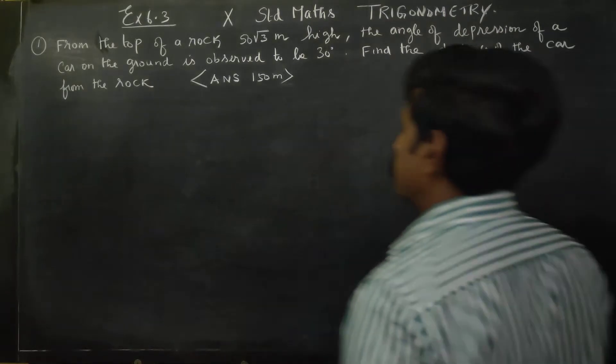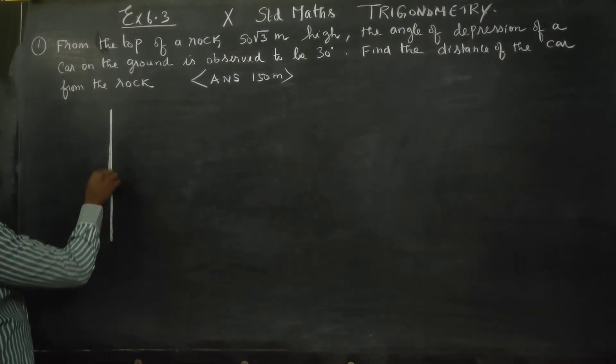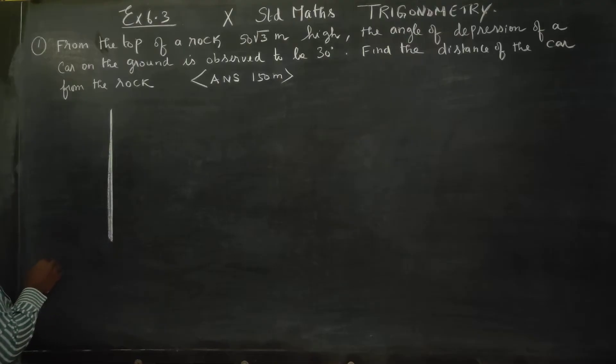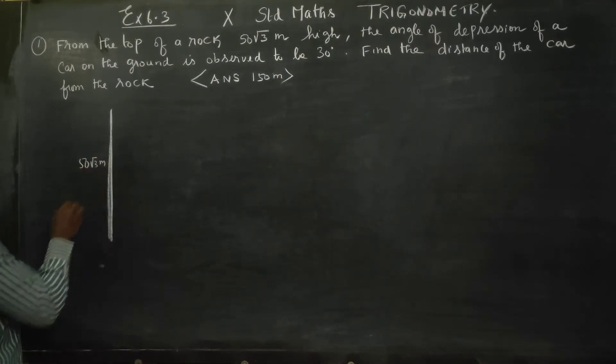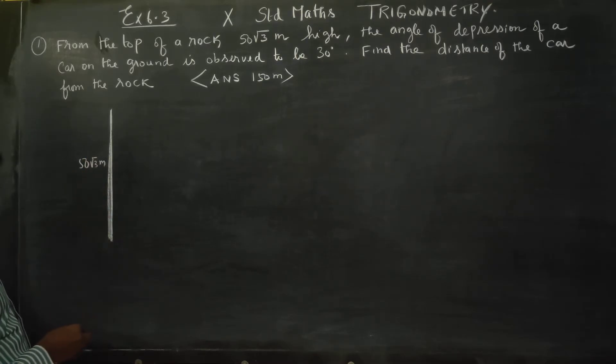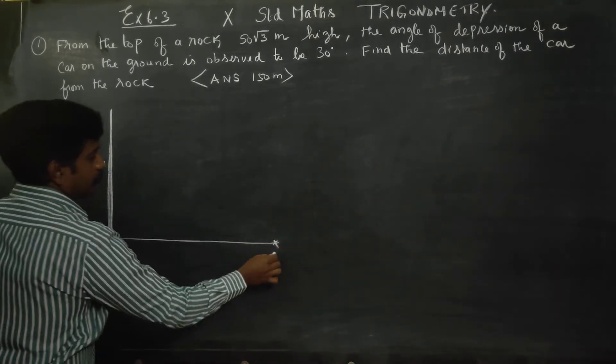From the top of a rock, this is a rock with height 50 root 3 meters. The angle of depression of the car on the ground, this is the ground, this is the car C.